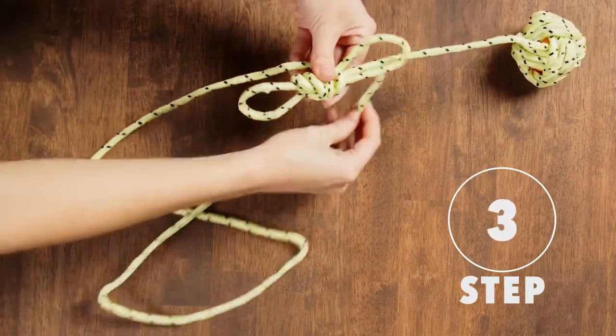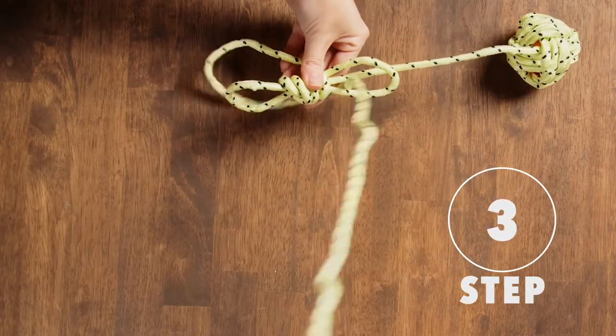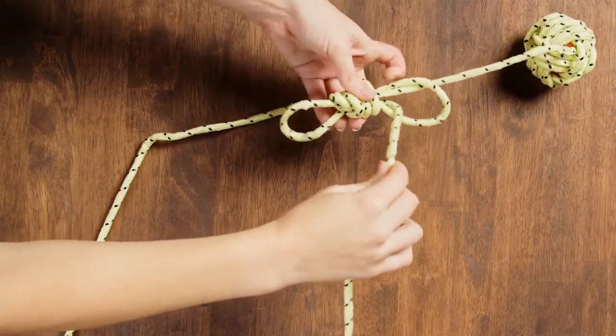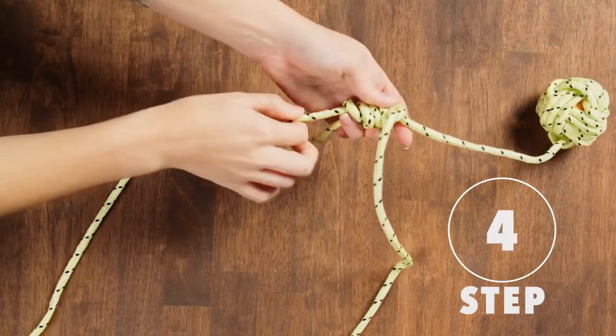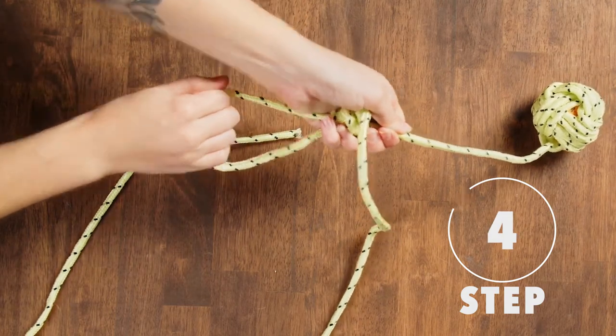Step 3. Stick the end of the rope through the part of the loop closest to the ball. Step 4. Pull the top loop so that the bottom loop becomes tight, securing the rope in it.